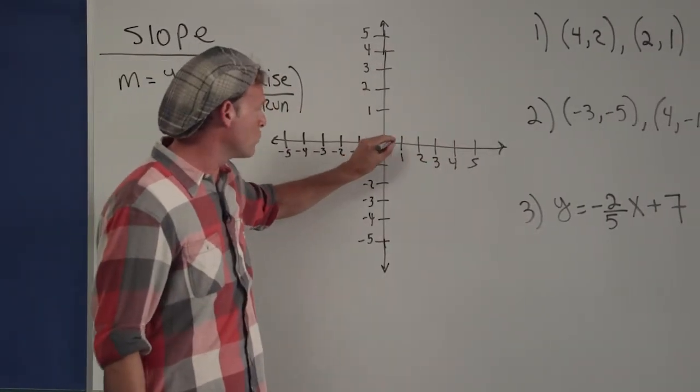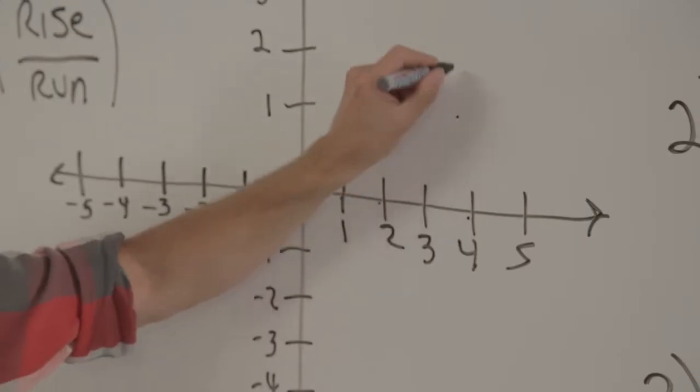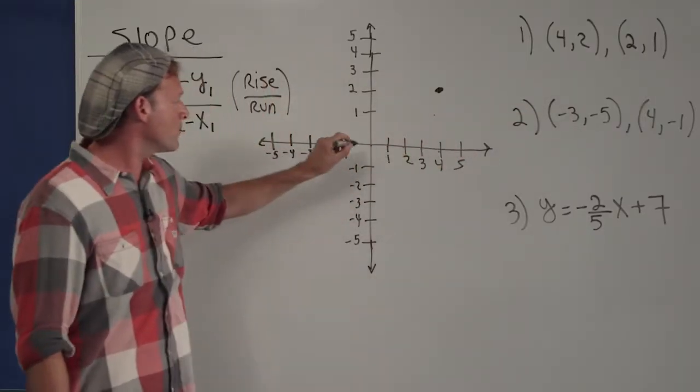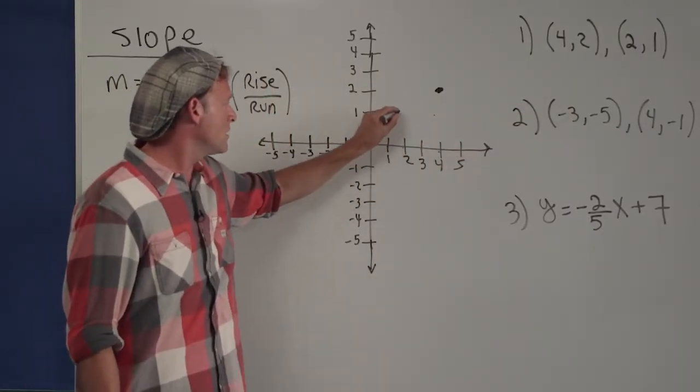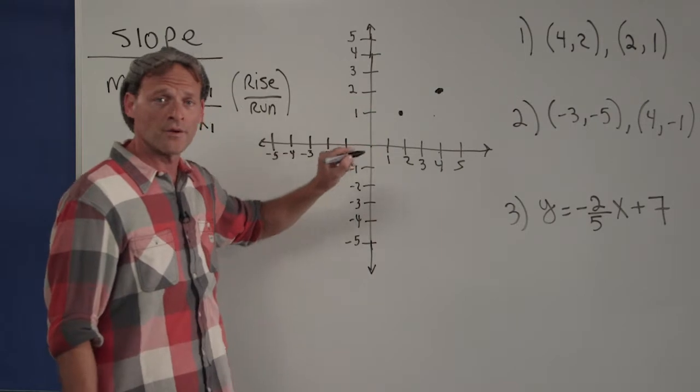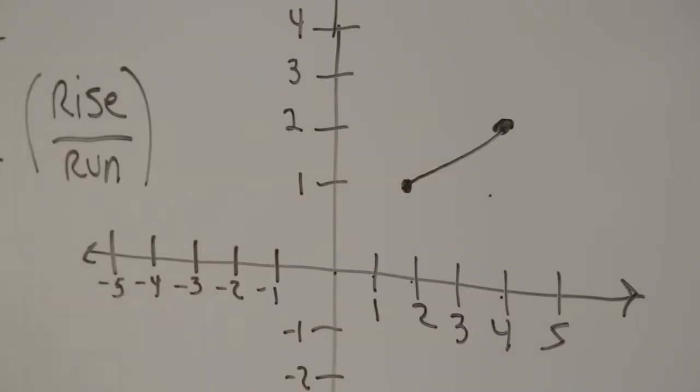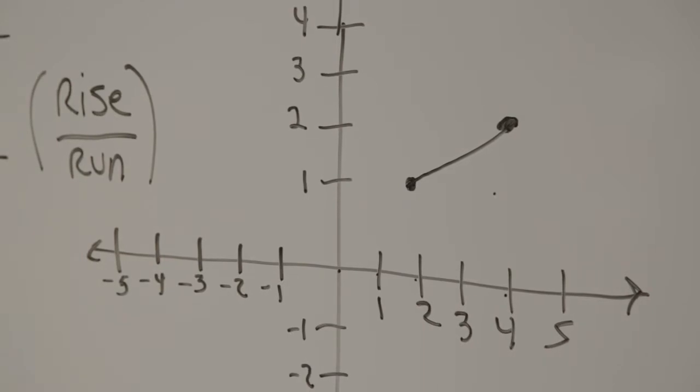We plot by moving four units to the right and then up two units. We're going to plot the second point by moving two units to the right and then one unit up. If we connect these points, we can see how steep this line is, relatively speaking.